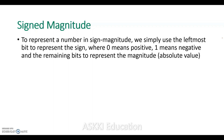The sign magnitude representation: if we look at the number of bits, the leftmost bit is used as the sign bit. For a positive number, the sign bit is 0, and for a negative number, the sign bit is 1. The remaining bits represent the absolute value.